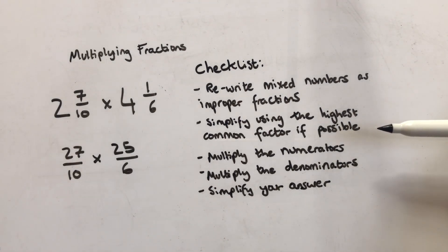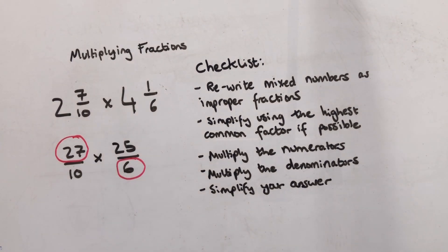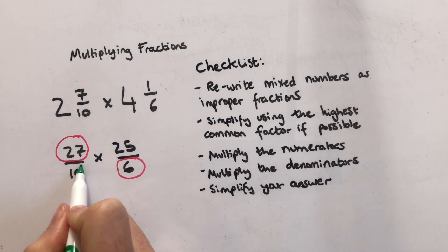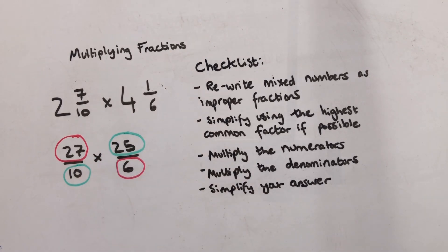Then it says I need to simplify using the highest common factor if possible. I know actually twenty seven and six fit into the three times table, so I'm going to try and simplify these two. But I can also see that ten and twenty five are in the five times table, so I can try and simplify those as well.